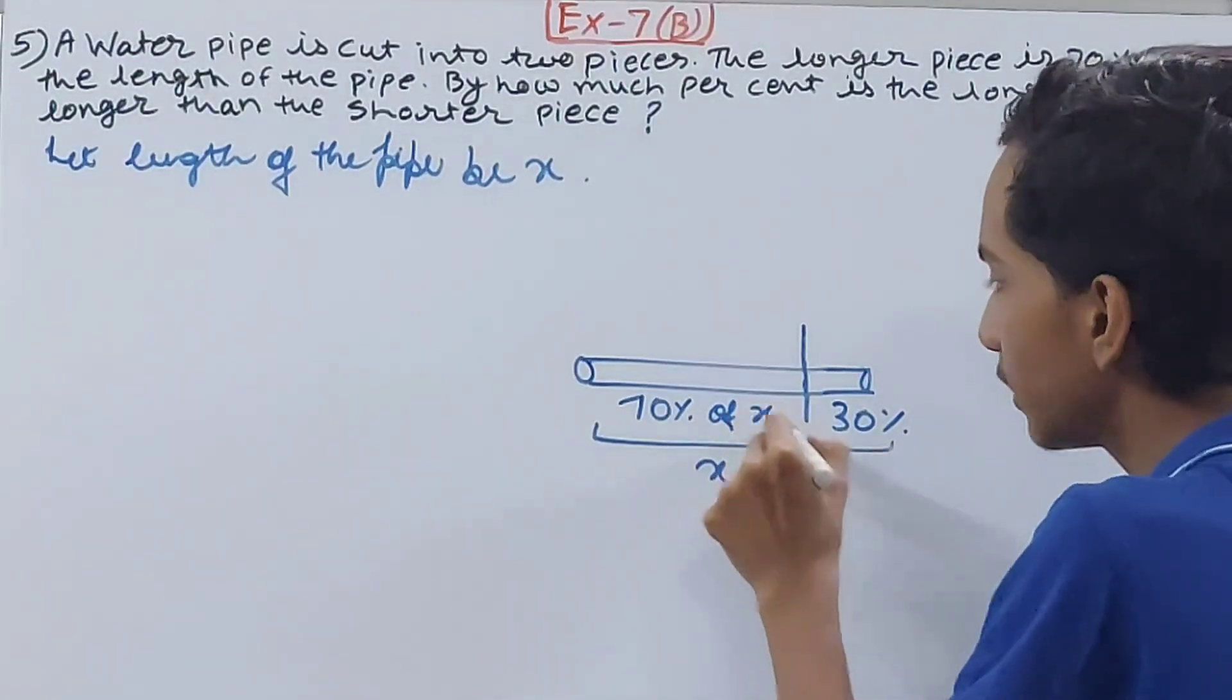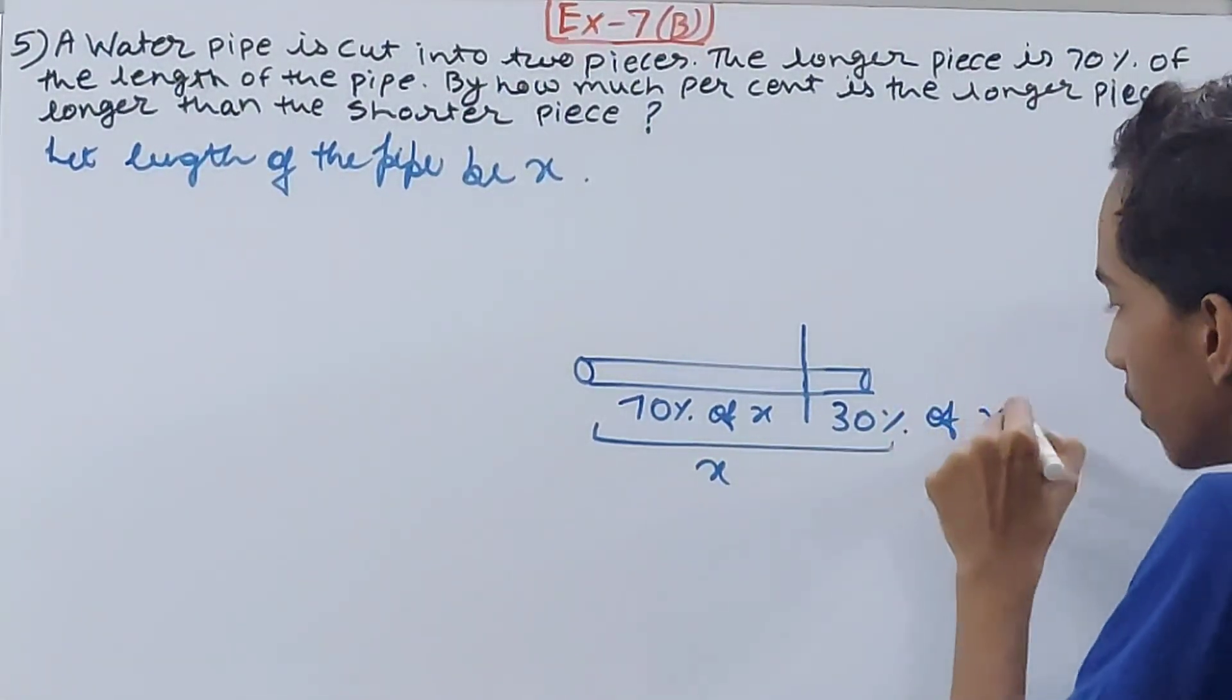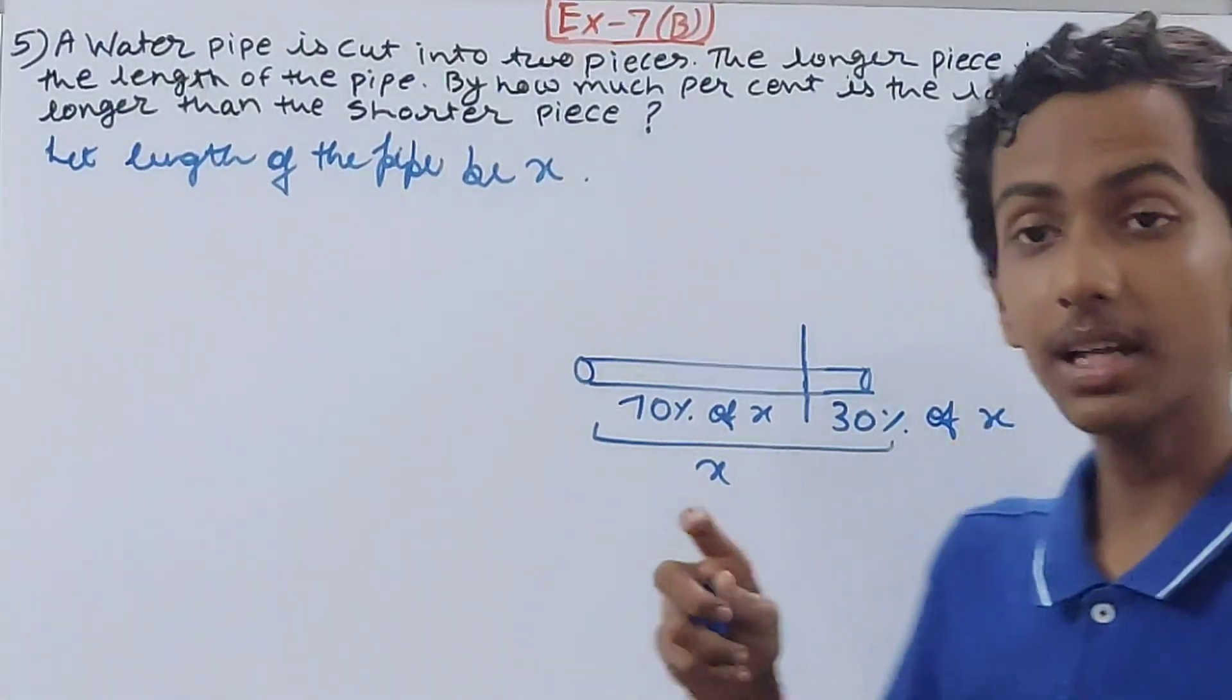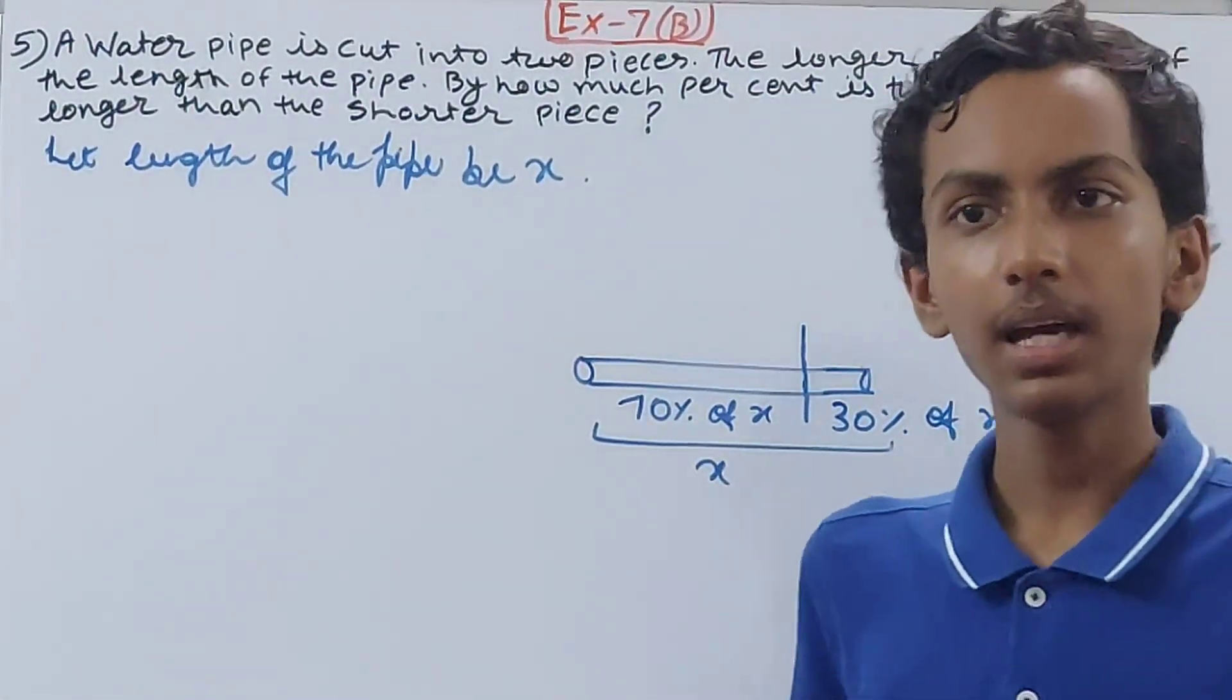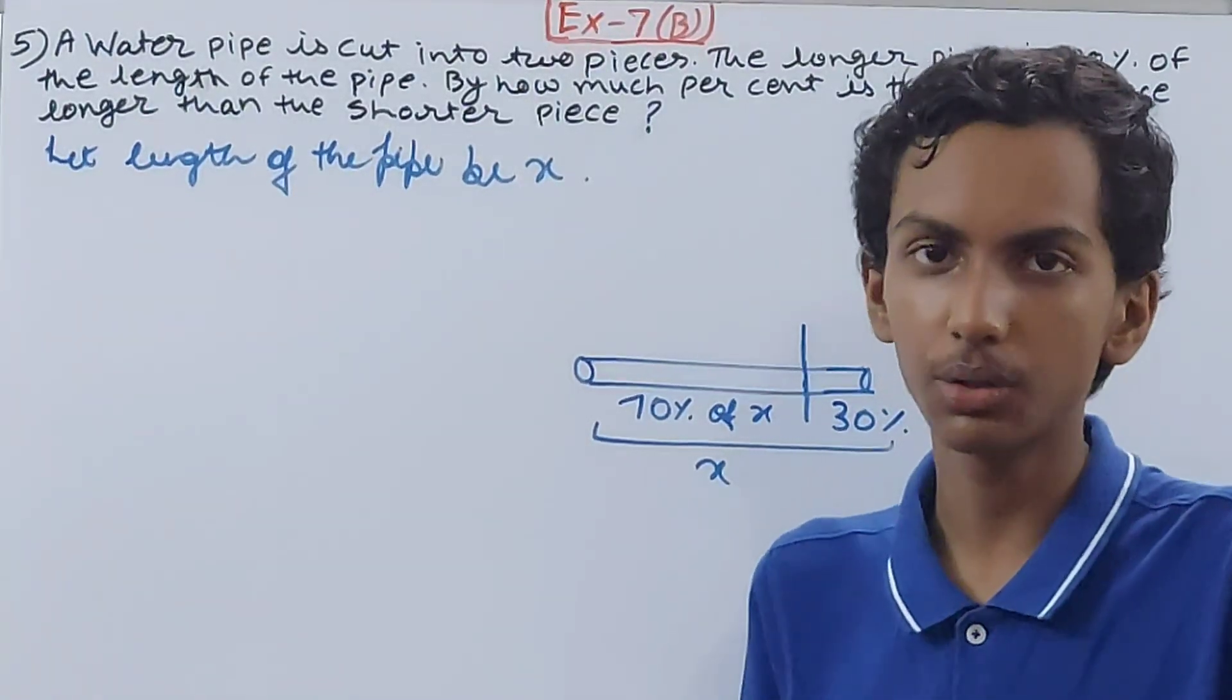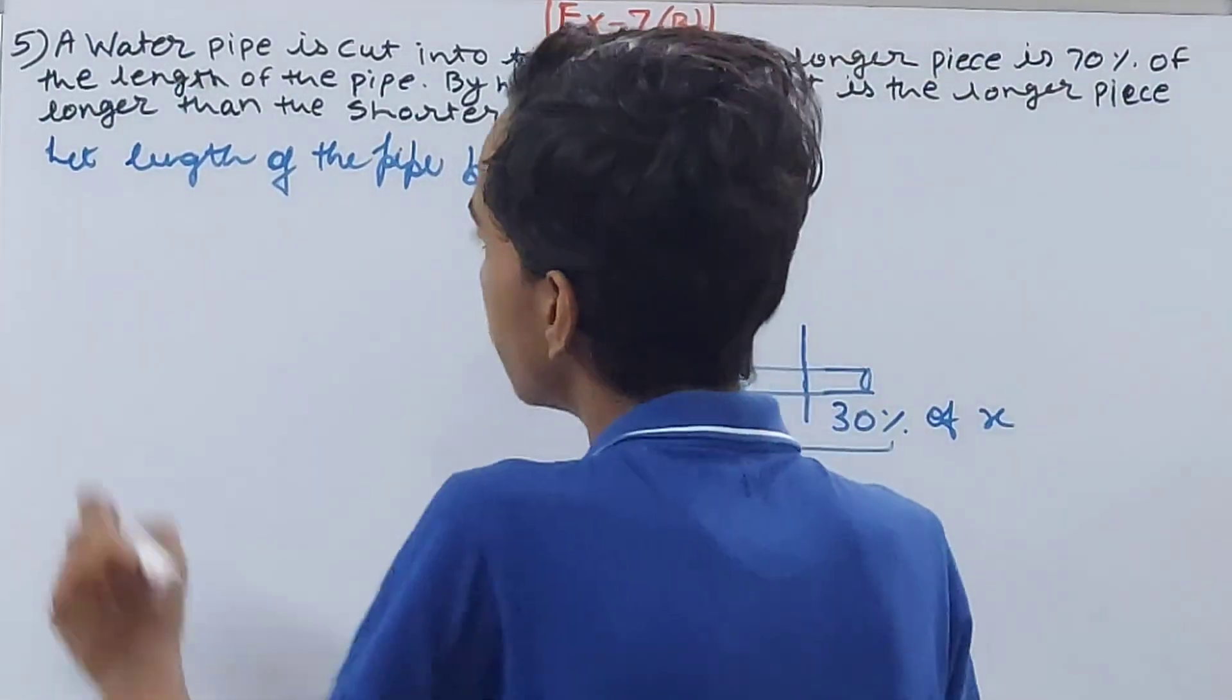So we are assuming this entire thing is x in length. So this will be 70% of x, and this will be 30% of x, because total we are assuming as x. One is covering 70% of the total pipe, one is covering 30% of the total pipe.